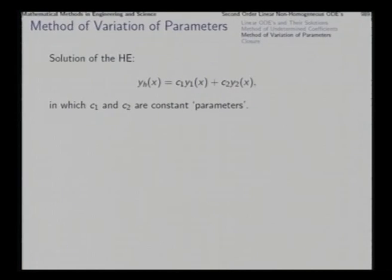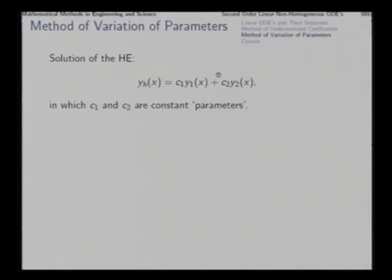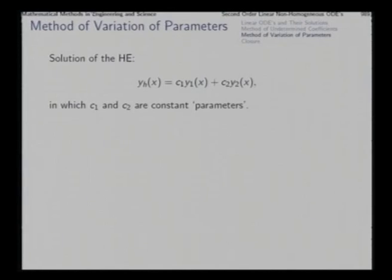For the non-homogeneous equation, the solution needs to be linearly independent of these two basis members. As long as these parameters are constant, we cannot have linearly independent functions. So we consider making these parameters variable — as functions of x — replacing c1 and c2 by functions u1(x) and u2(x). This is called variation of parameters.